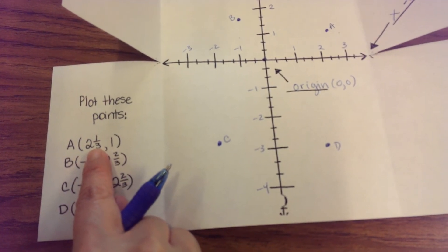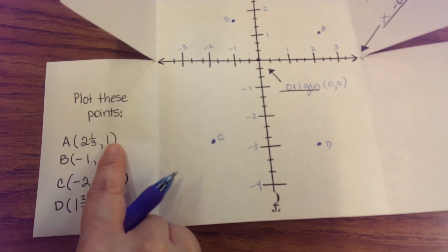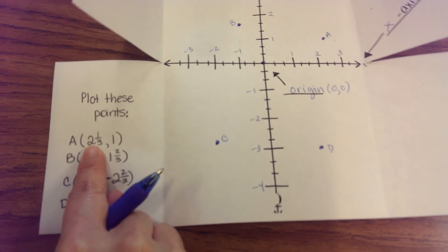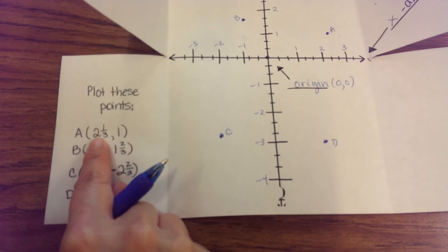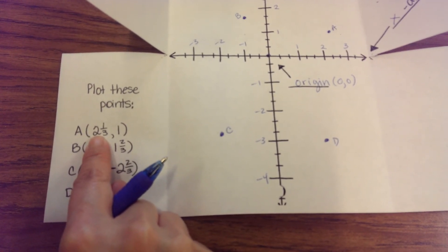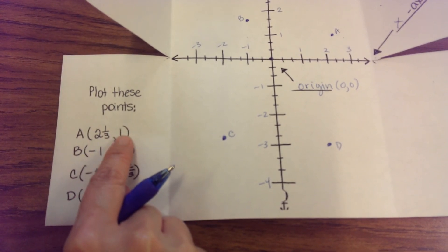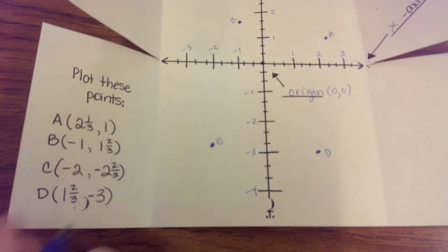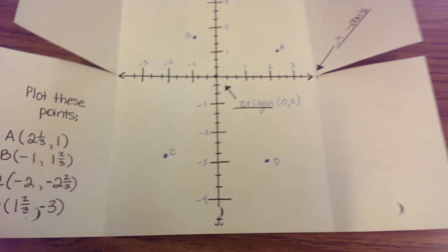So that's how we plot points on the coordinate plane. The first number is the x-axis — it tells you how many steps right or left to go. The second number is the y-axis — it tells you up or down, kind of like an elevator.